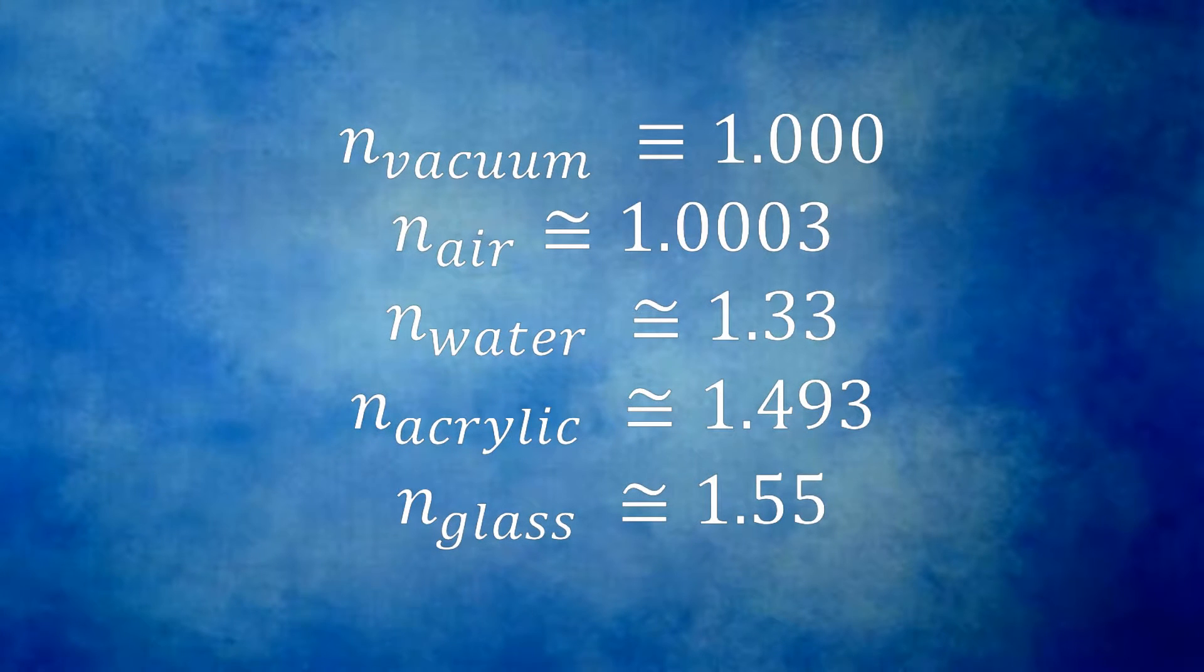Here are some examples of indices of refraction. Vacuum, by definition, is 1. Air, being slightly denser than vacuum, is around 1.0003. Water is around 1.33. Acrylic plastic is about 1.493. And glass is in the range of 1.55.